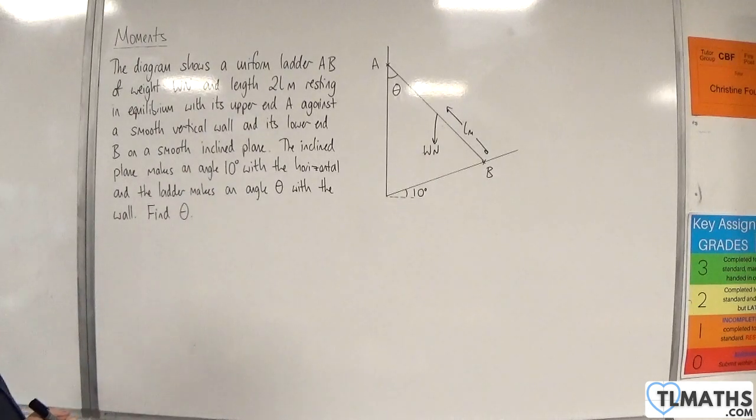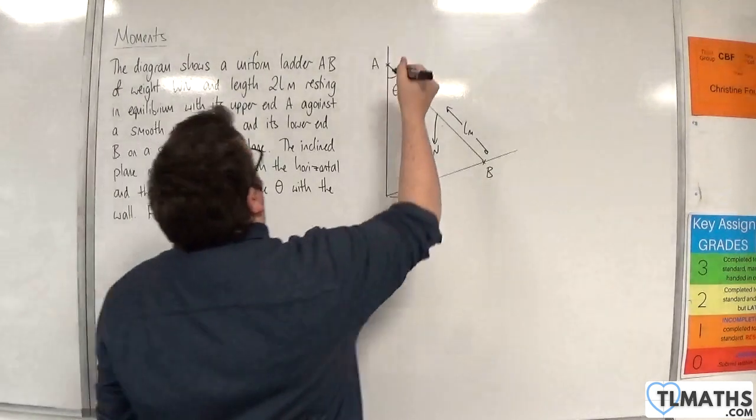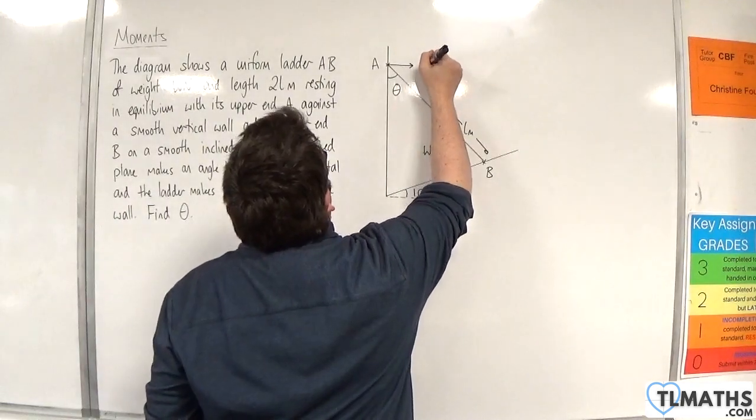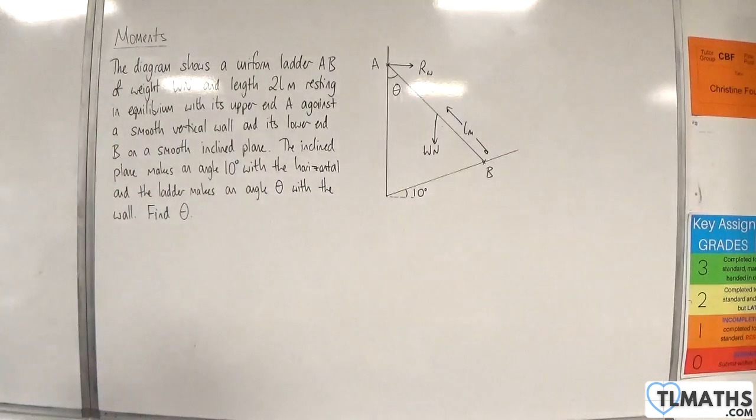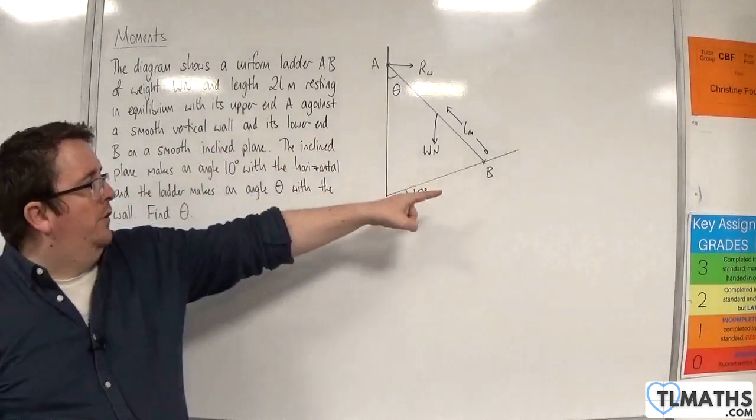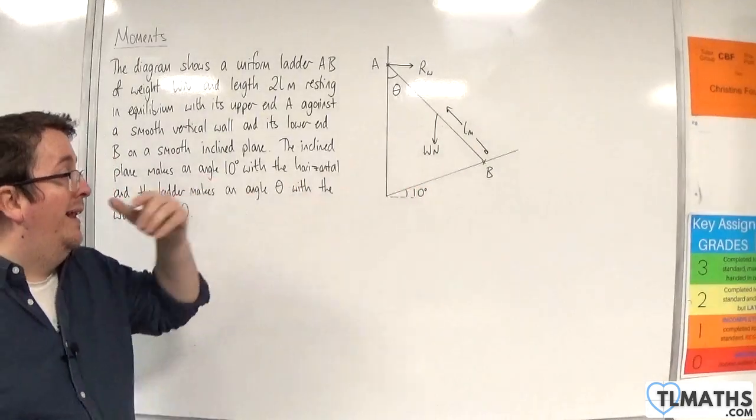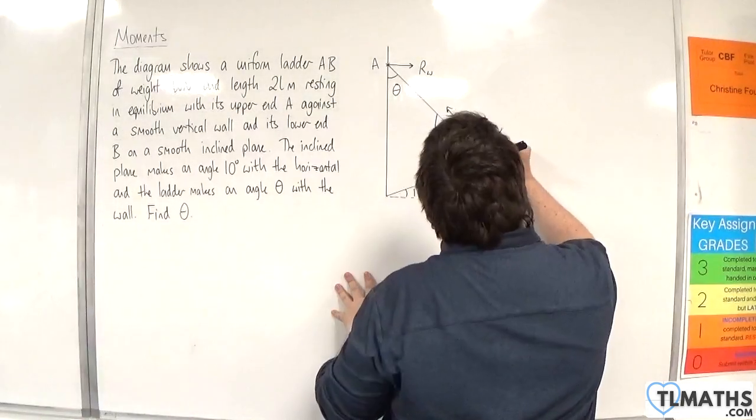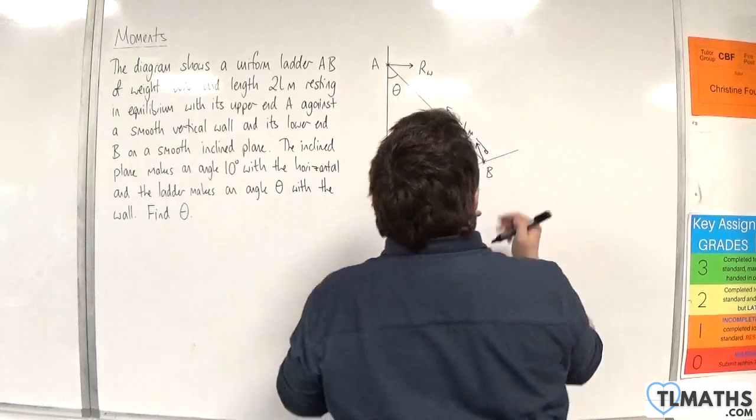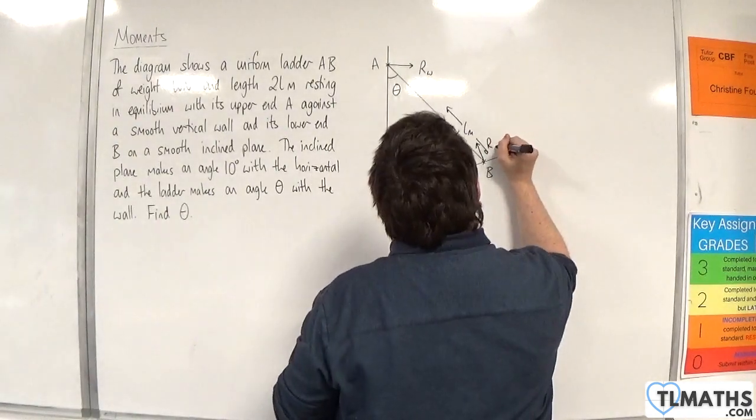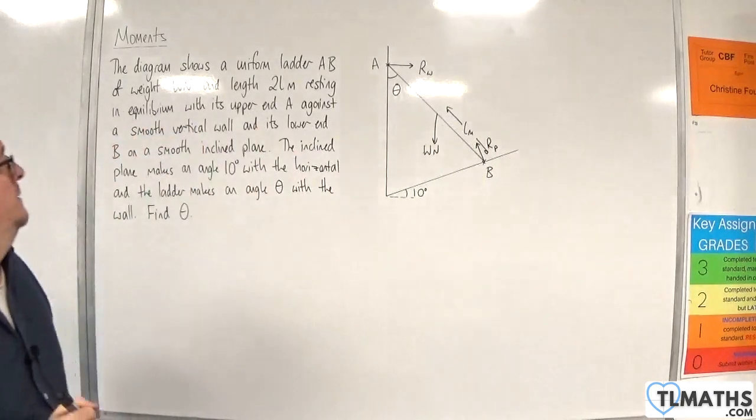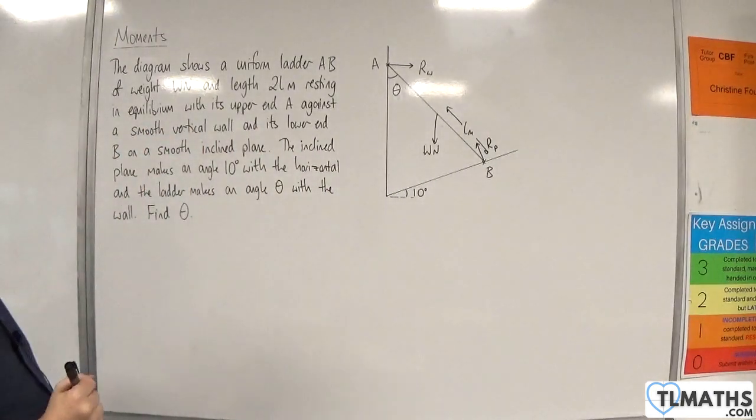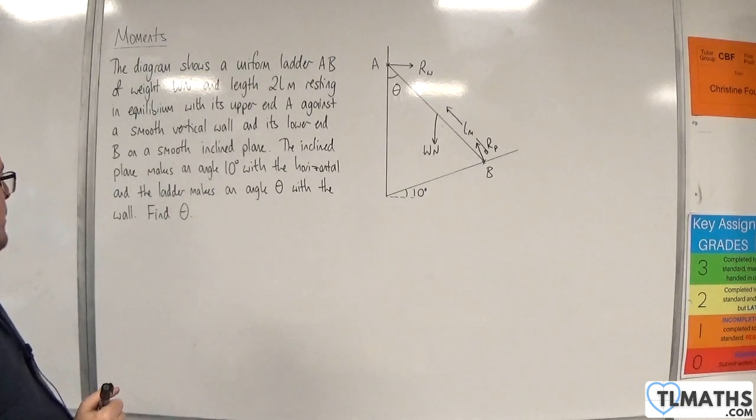Its upper end A is against a smooth vertical wall, so there'll be a normal reaction force to the wall. Let's call that RW, and the plane is smooth as well, so there will be a normal reaction force perpendicular to the plane, so let's call that RP.